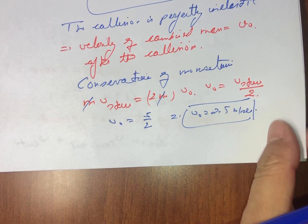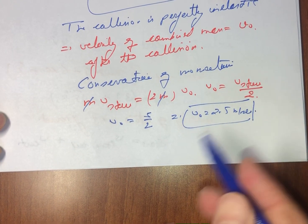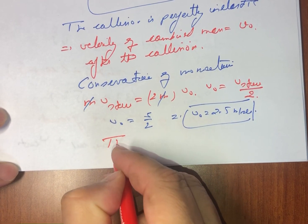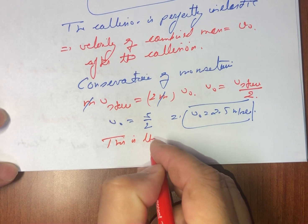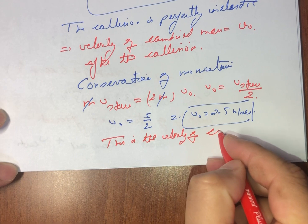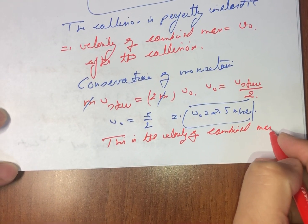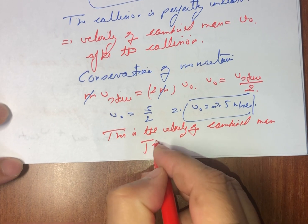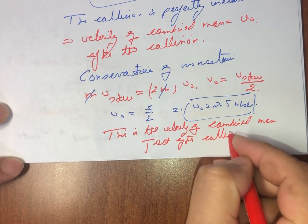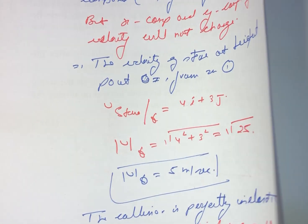This was our Part A answer: the velocity of the combined mass just after the collision is 2.5 meters per second. Now let's calculate Part B.